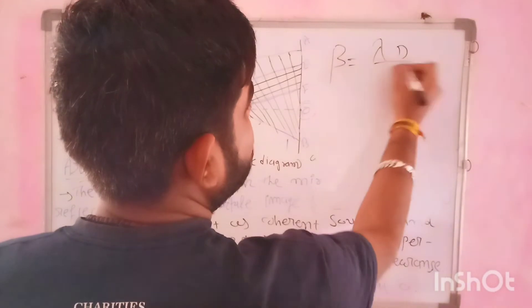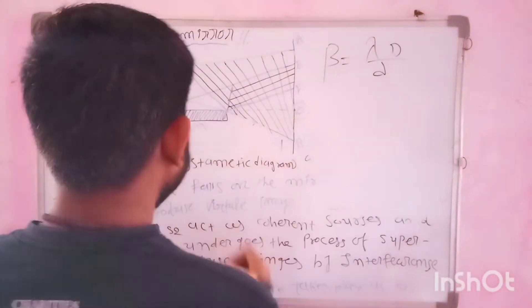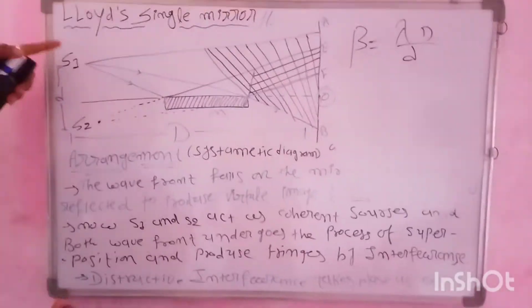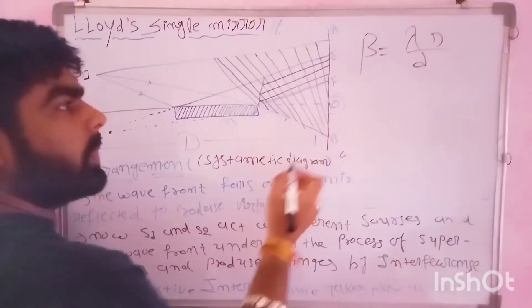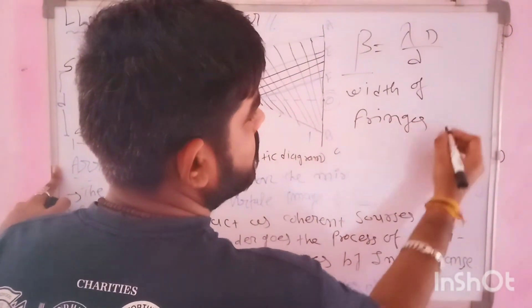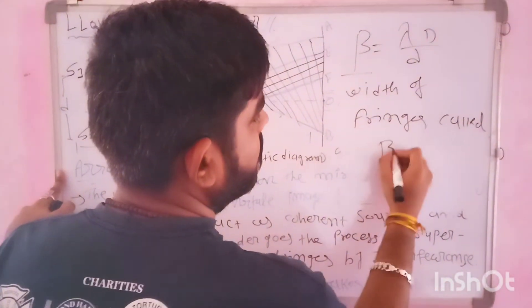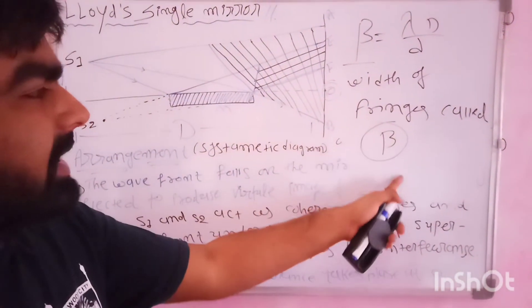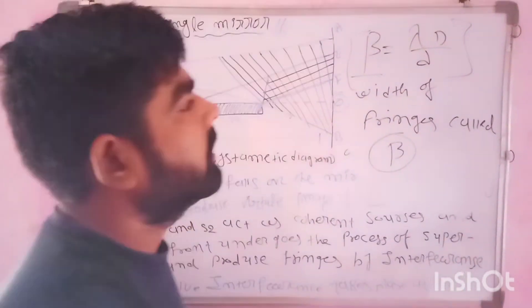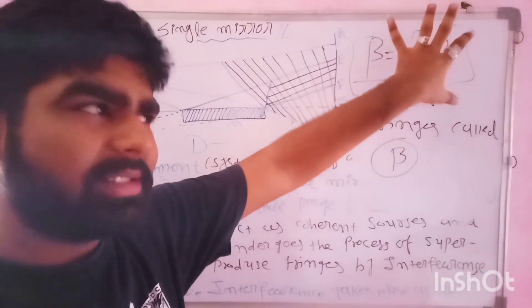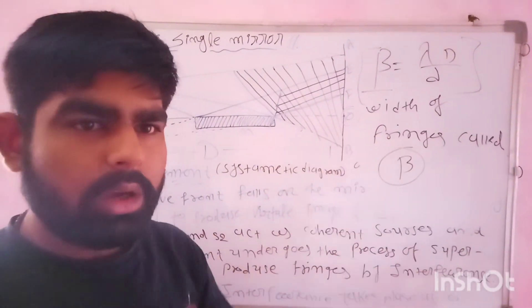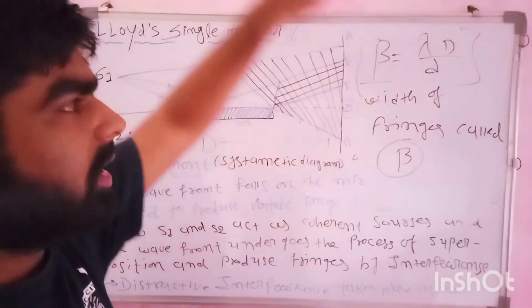Beta equals lambda capital D by d. Capital D is the distance between slit to screen, and small d is the distance between S1 and S2, means coherent sources. Width of fringe is called beta. This is the distance between S2. So this is the width of fringe, lambda D by d. This is the same thing in Fresnel biprism.